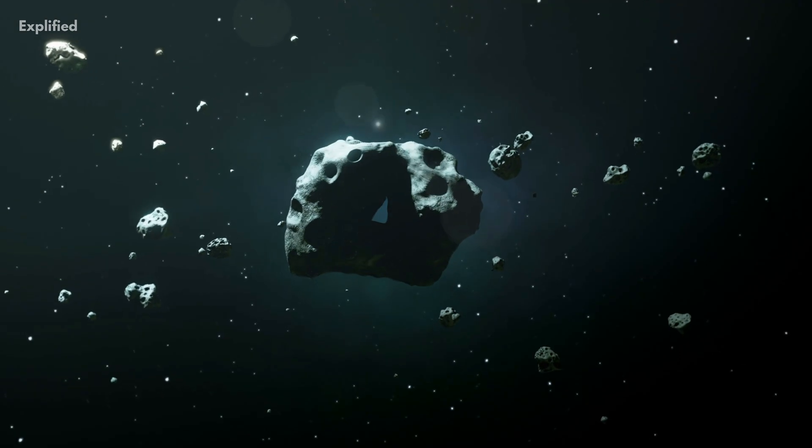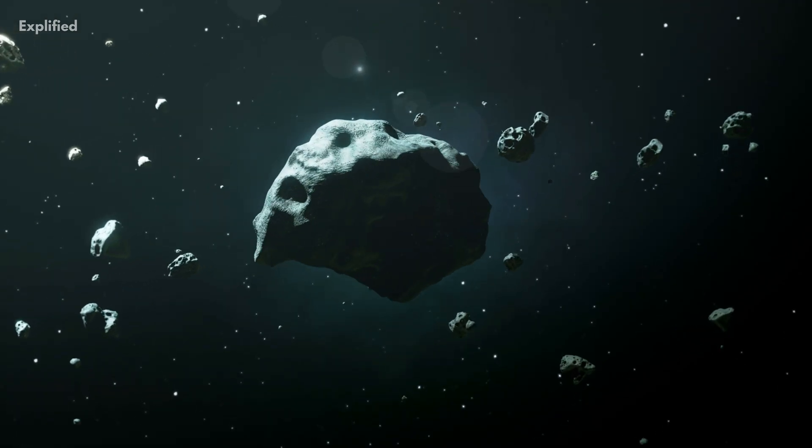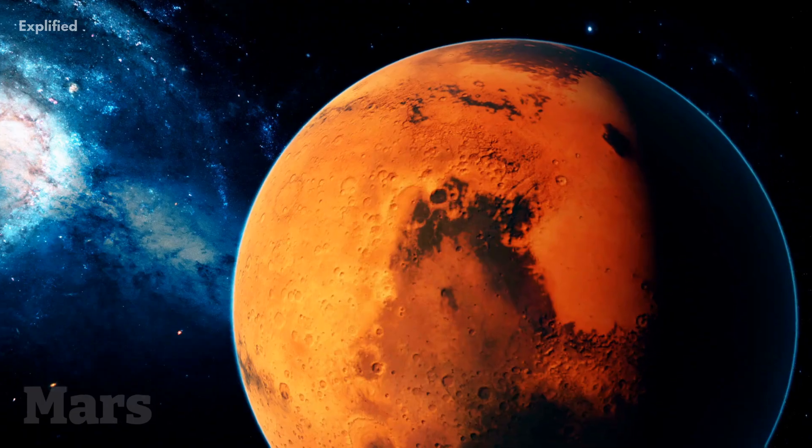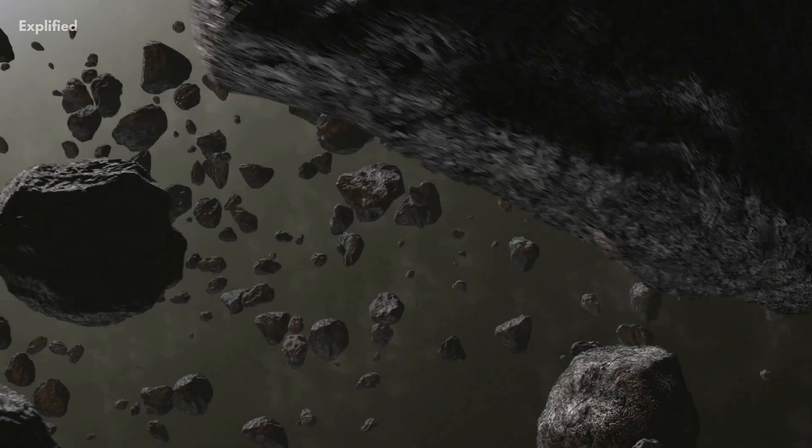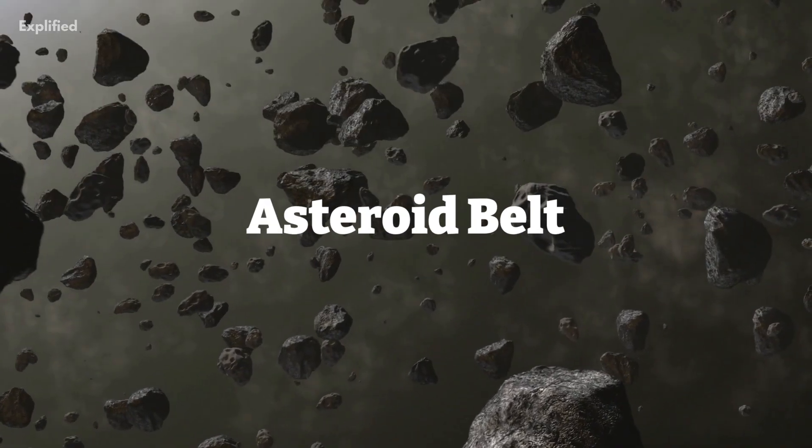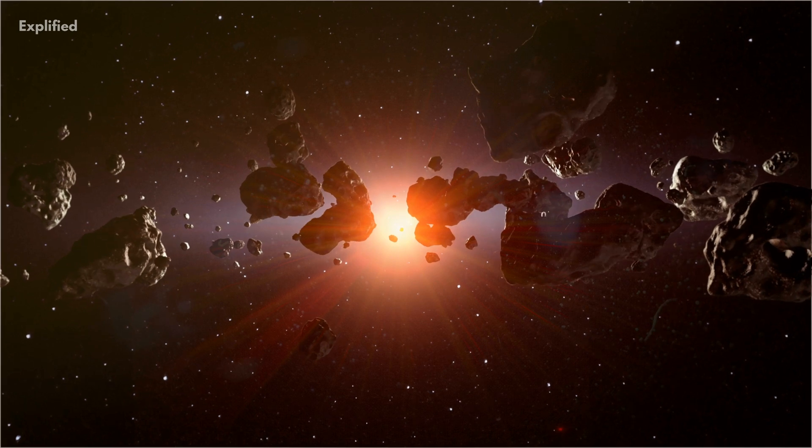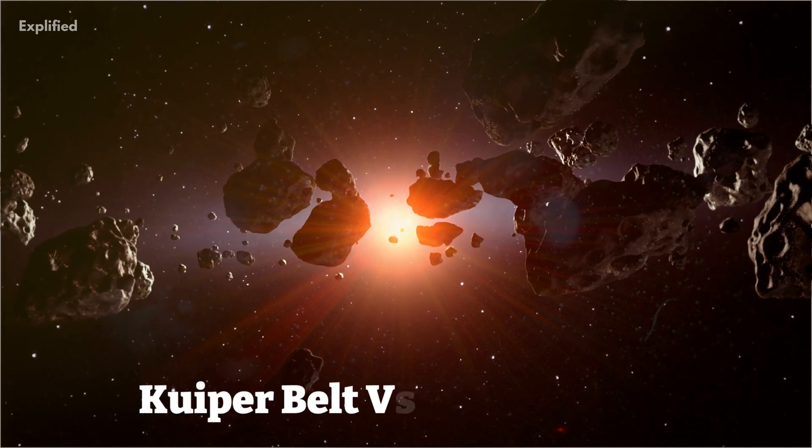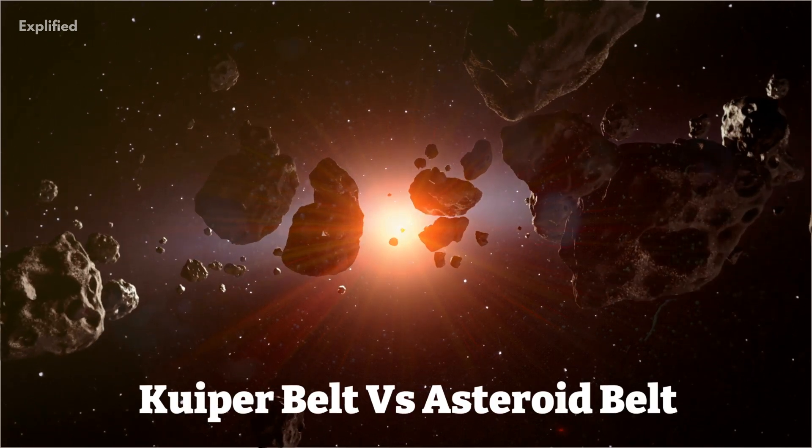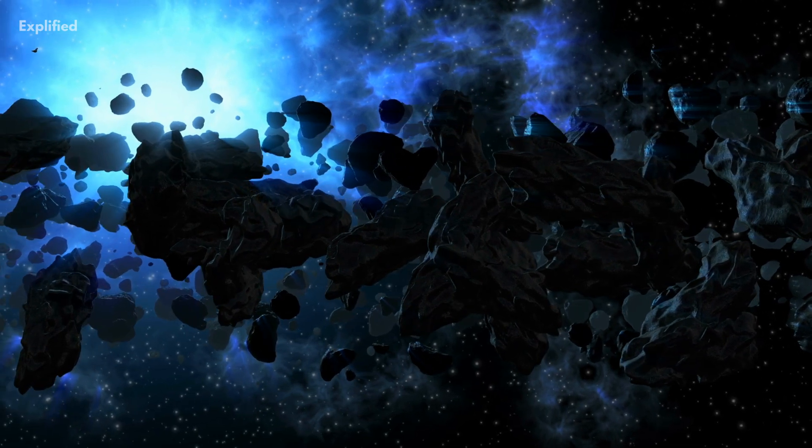There are countless asteroids in our solar system which are located in a region of space between Mars and Jupiter. This is known as the Asteroid Belt. There are many similarities between the Asteroid Belt and the Kuiper Belt, but in this video we will be exploring some of their key differences.